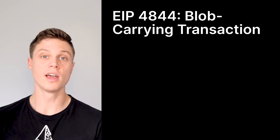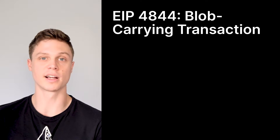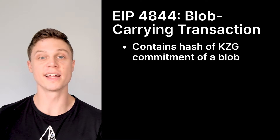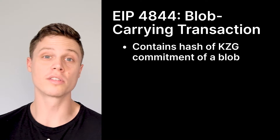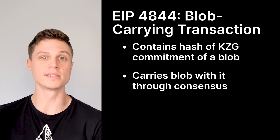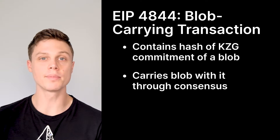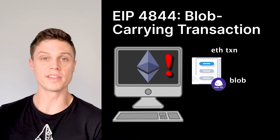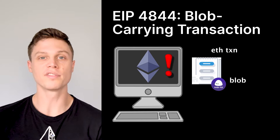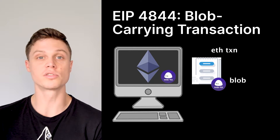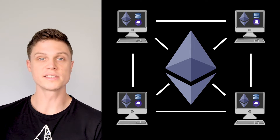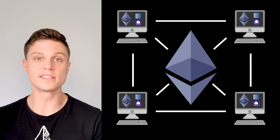In order to handle these blobs of data, EIP 4844 is introducing a new transaction type called a blob-carrying transaction. On-chain, these blob-carrying transactions will have a hash of a KZG commitment, which is an identifier to the blob. This transaction passes through Ethereum consensus just like a normal transaction, except that it has a sidecar with the blob data attached. Whenever an Ethereum node sees one of these blob-carrying transactions, it knows it will have to do some extra work with the blob attached to the transaction. Just like call data, right now these blobs will still be stored on every single node.